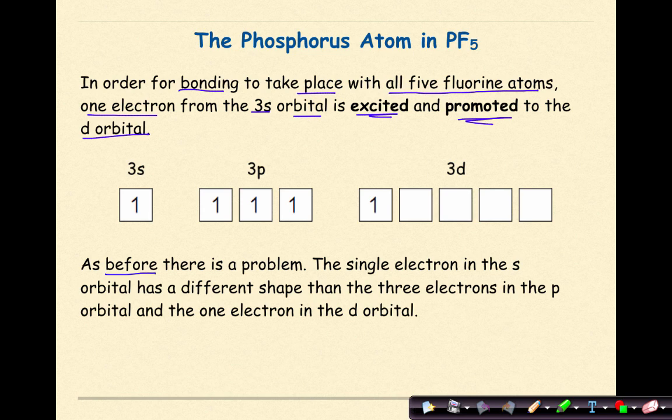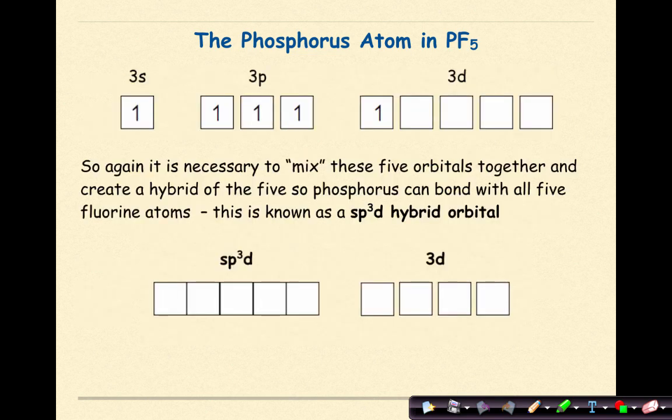As before, there is a problem. The single electron in the S orbital has a different shape than the three electrons in the P orbital and the one electron in the D orbital. So again, it is necessary to mix these five orbitals together and create a hybrid of the five, so phosphorus can bond with all five fluorine atoms. This is known as SP3D hybrid orbital.